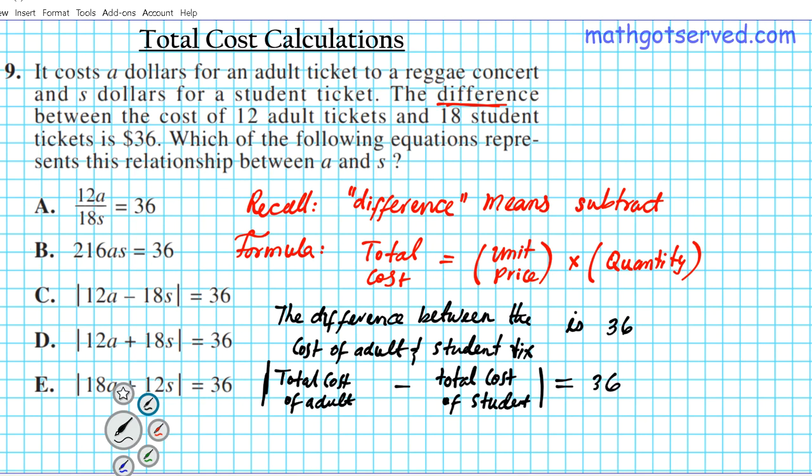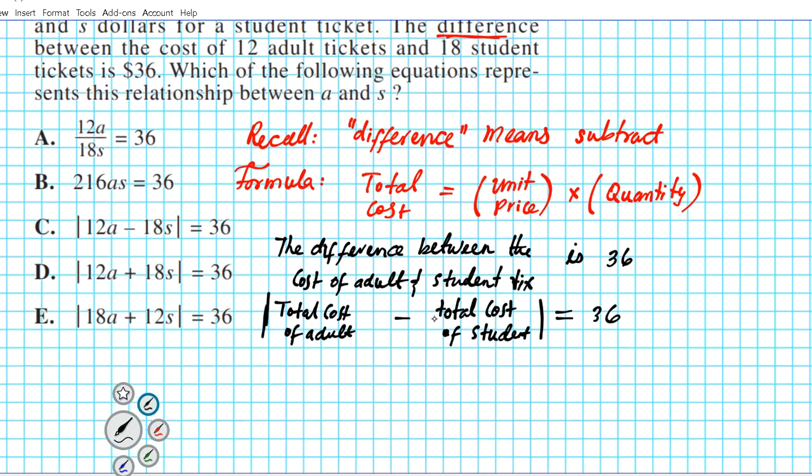So in this scenario we have two total cost calculations that we're going to be carrying out. The first total cost calculation involves the total cost of adult tickets. The total cost of adult tickets is basically the unit cost of adult tickets or unit price multiplied by the quantity. So we're going to have, for the adults, the unit price for adult times quantity of adult tickets. And then for student tickets the same, we're going to be multiplying the unit price for student tickets by the quantity of student tickets that were bought. And that is equal to 36.